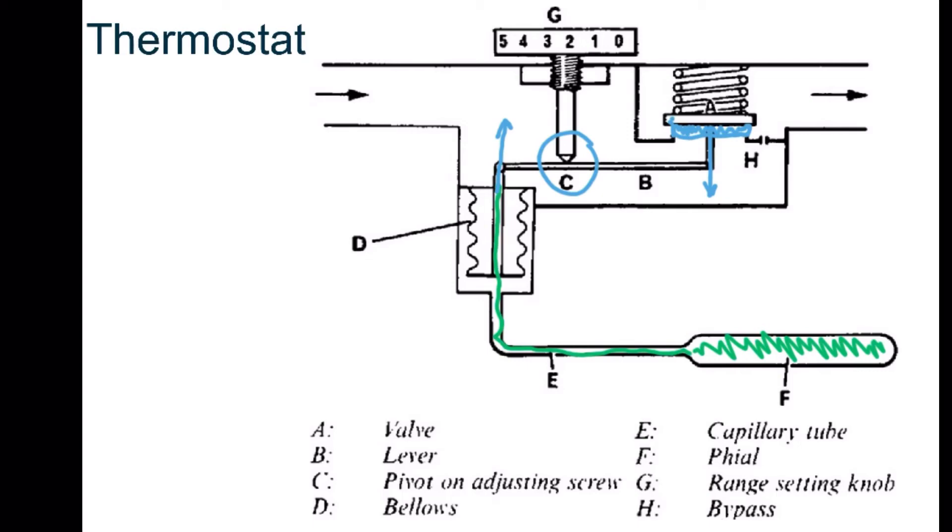Now if we left it like that, the gas would be stuck. It would come in here and wouldn't be able to get any further because the gas valve is closed. So within a thermostat, we have a small bypass hole which allows some gas to escape through and go to the burner.